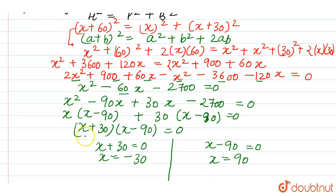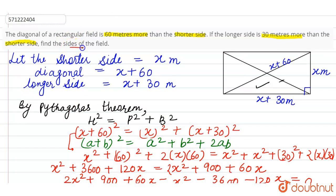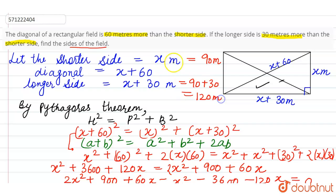Since a side cannot be negative, x = −30 is rejected. Therefore, the shorter side is 90 meters. The longer side is x + 30 = 90 + 30 = 120 meters. And the diagonal is 90 + 60 = 150 meters.